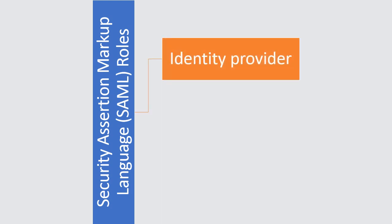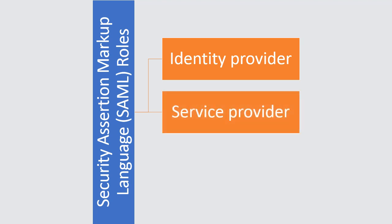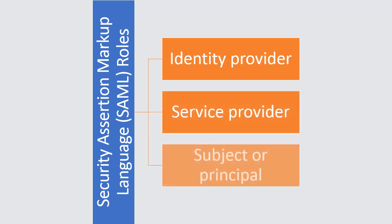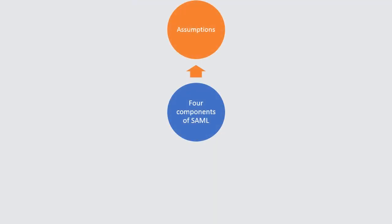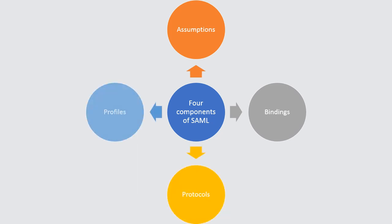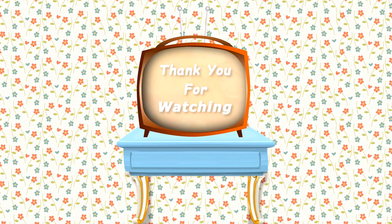Security Assertion Markup Language roles are: Identity Provider, Service Provider, and Subject or Principal. The 4 components of SAML are: Assertions, Bindings, Protocols, and Profiles.